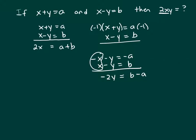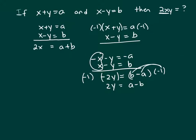Multiply everything on both sides by negative 1 so I have a positive coefficient. So it's 2y equals a minus b. I multiply negative 1 times negative a, and negative 1 times b. So solving for y: y equals a minus b divided by 2.